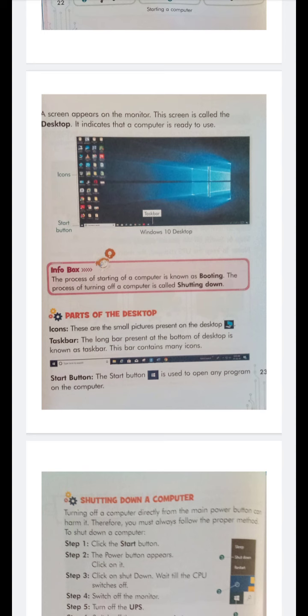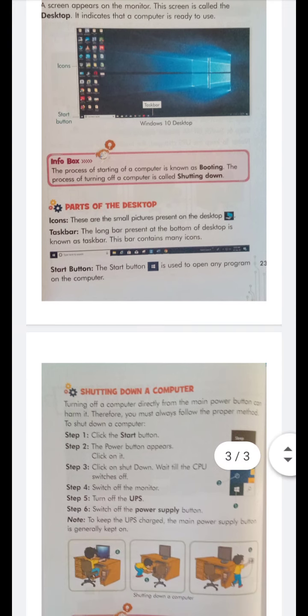The long bar present at the bottom of the desktop is known as the taskbar. This bar contains many icons. You can see in the picture the long bar present at the bottom of the desktop, which is known as the taskbar.